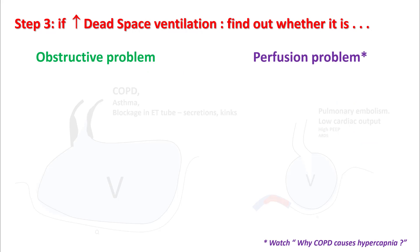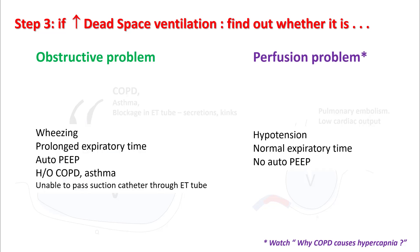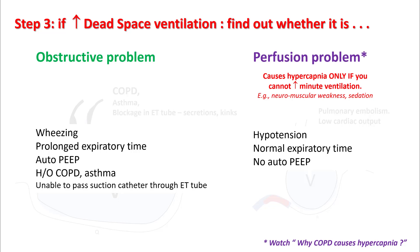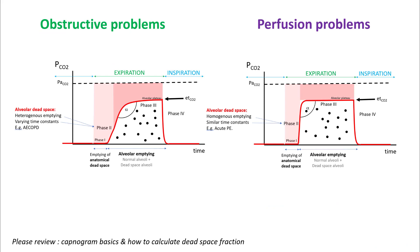If you have an increased dead space problem, try to figure out if it is an obstructive problem or a perfusion problem. Obstructive patients will be wheezing with prolonged expiratory time, auto-PEEP, and will have a history of COPD or asthma. Patients with a perfusion problem will be hypotensive with normal expiratory time and no auto-PEEP or wheezing. Perfusion problems cause hypercapnia only if you cannot increase your minute ventilation, such as in patients with neuromuscular weakness or on sedation in the ICU. Watch my lecture on why COPD causes hypercapnia to understand this difference better.